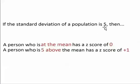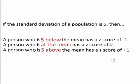If the standard deviation of the class is 5, then a person who is 5 above the mean is one standard deviation above the mean, so that person has a z-score of plus 1. A student in the class with an exam score that's 5 below the mean would have a z-score of minus 1, because that student would be one standard deviation below the mean. If the standard deviation of the class is 5, then a student who is 5 below the mean is one standard deviation below the mean.